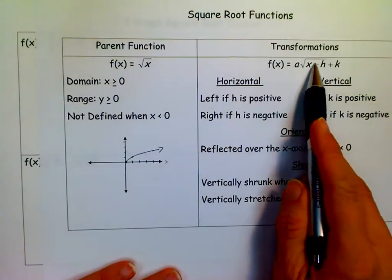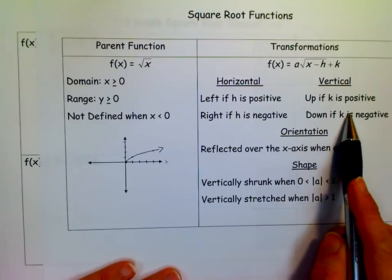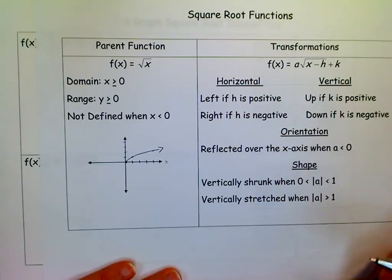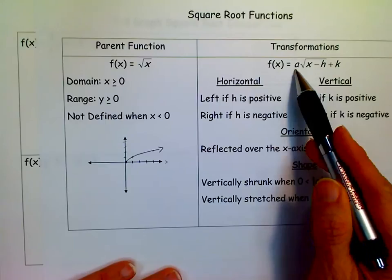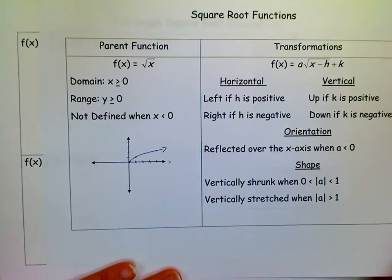The thing inside the radical that's being added or subtracted shifts left or right. The thing outside shifts up or down. The a, the absolute value of a, makes it vertically stretched or shrunk. And whether it's positive or negative tells you whether it's flipped over the x-axis. So those are all important things to remember when you're graphing.